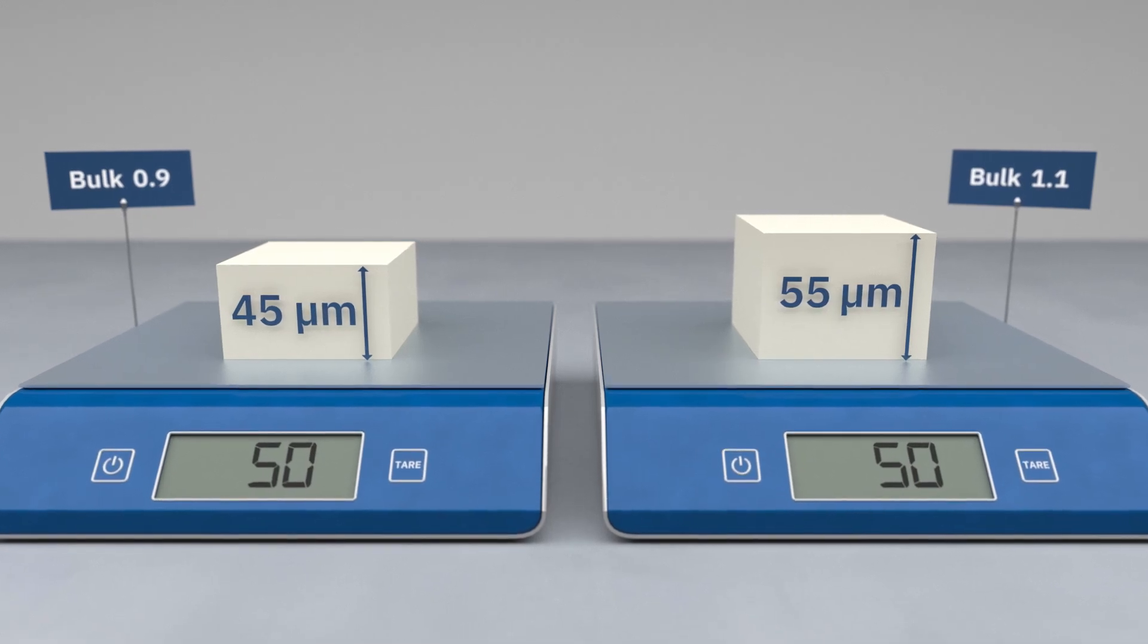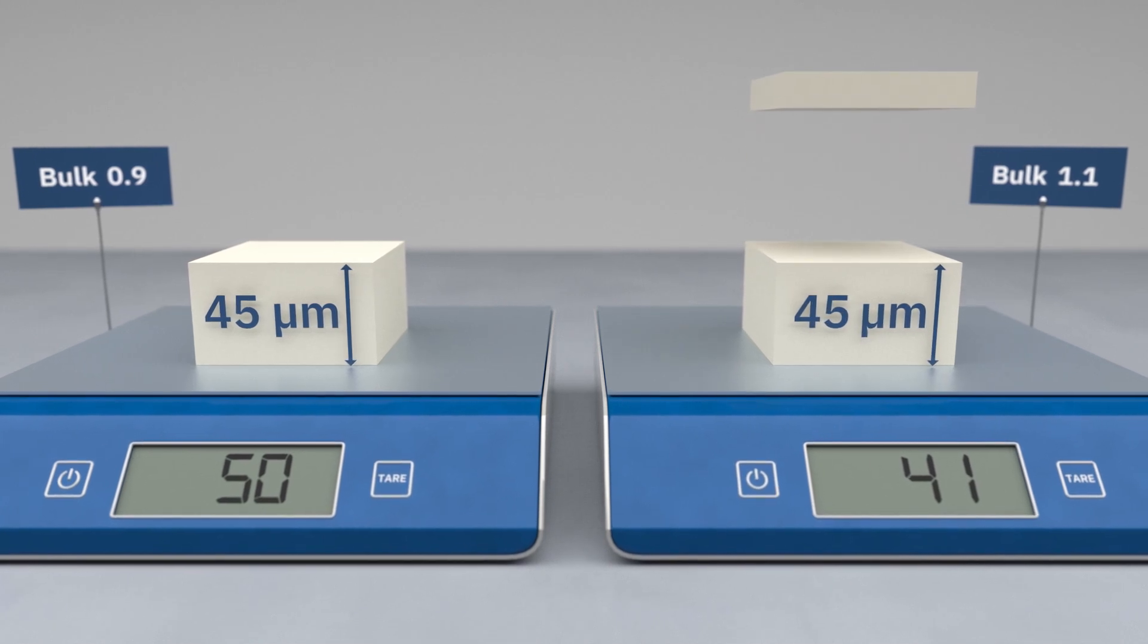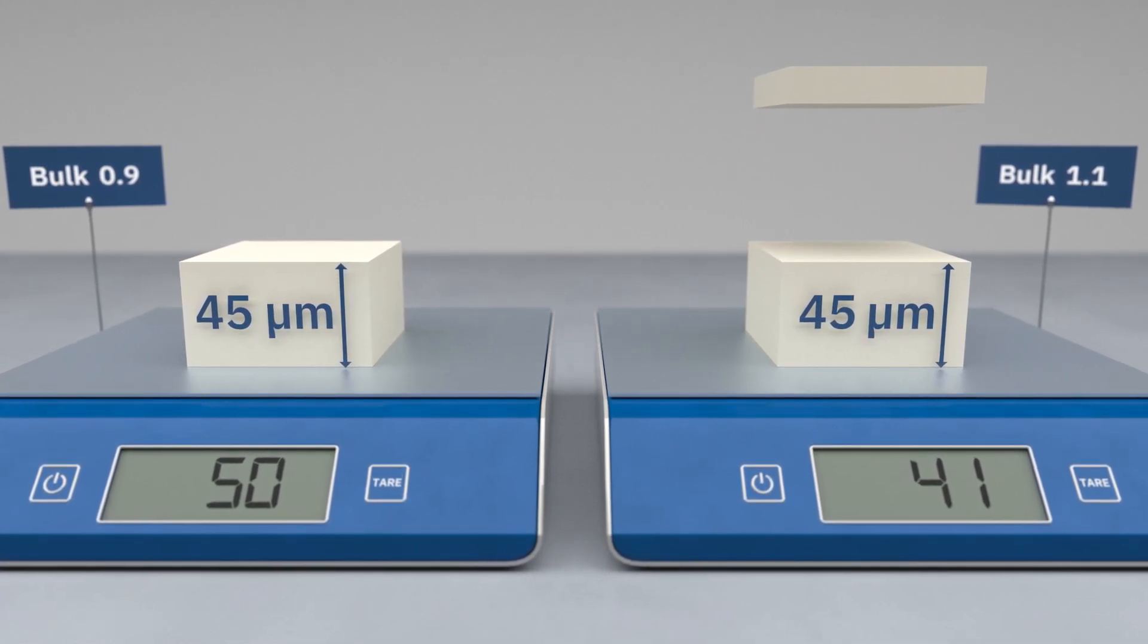If you do that, you'll see that a high bulk paper can give you the same thickness in micrometres as your old paper. It will just weigh less as it contains more air.